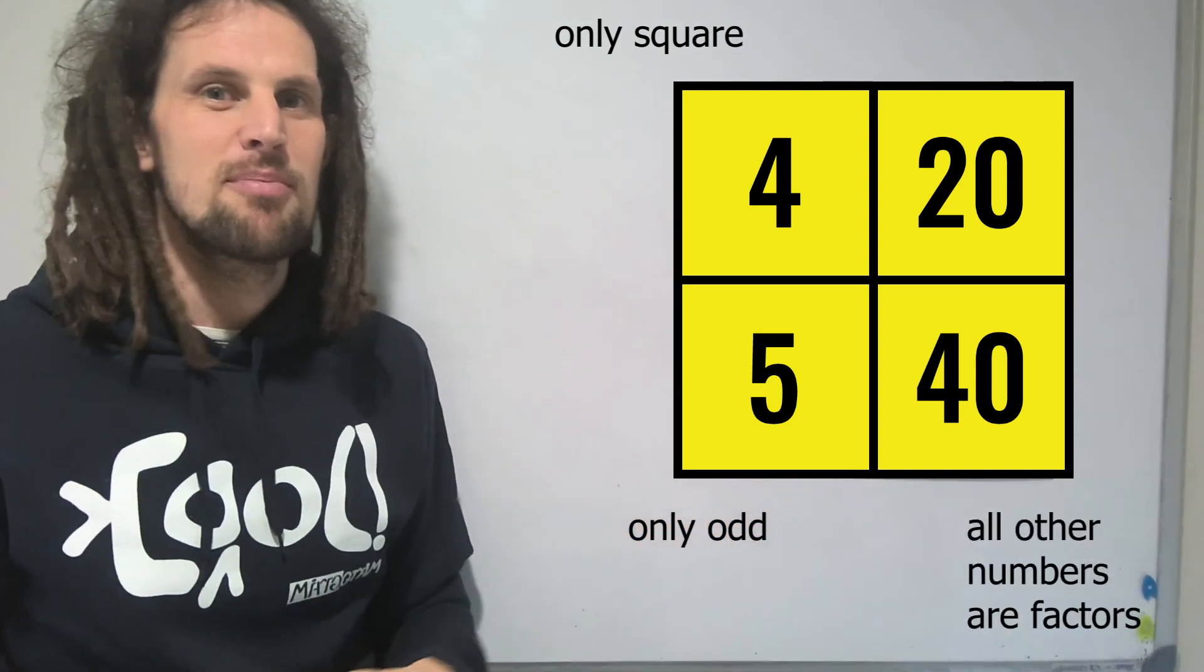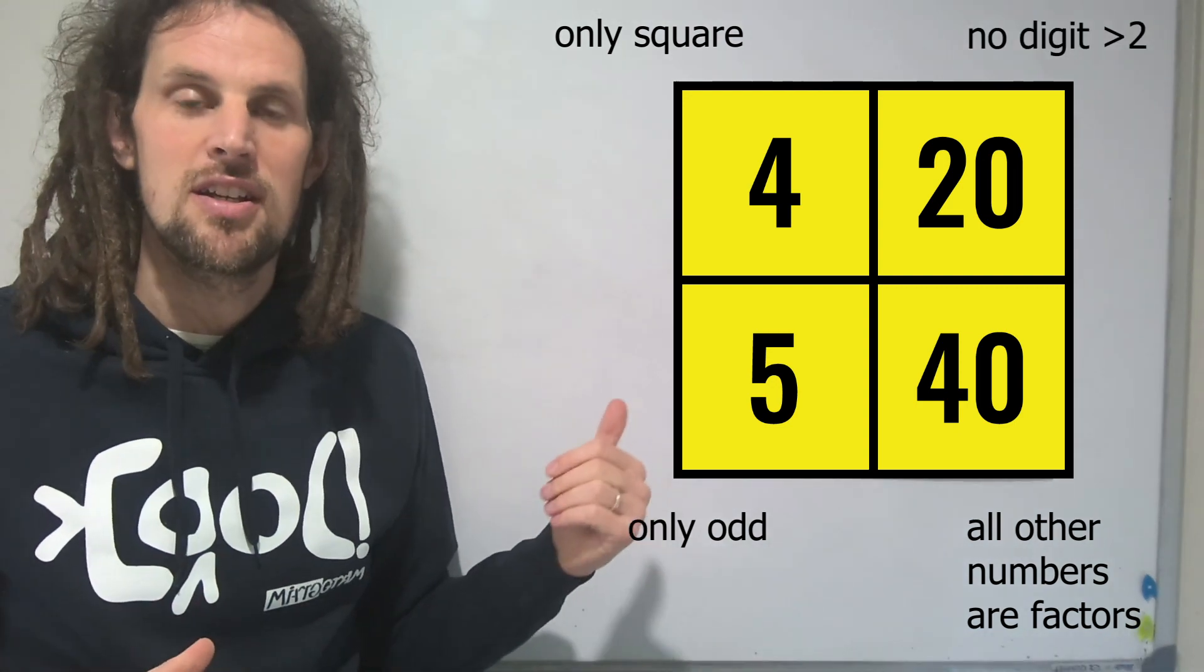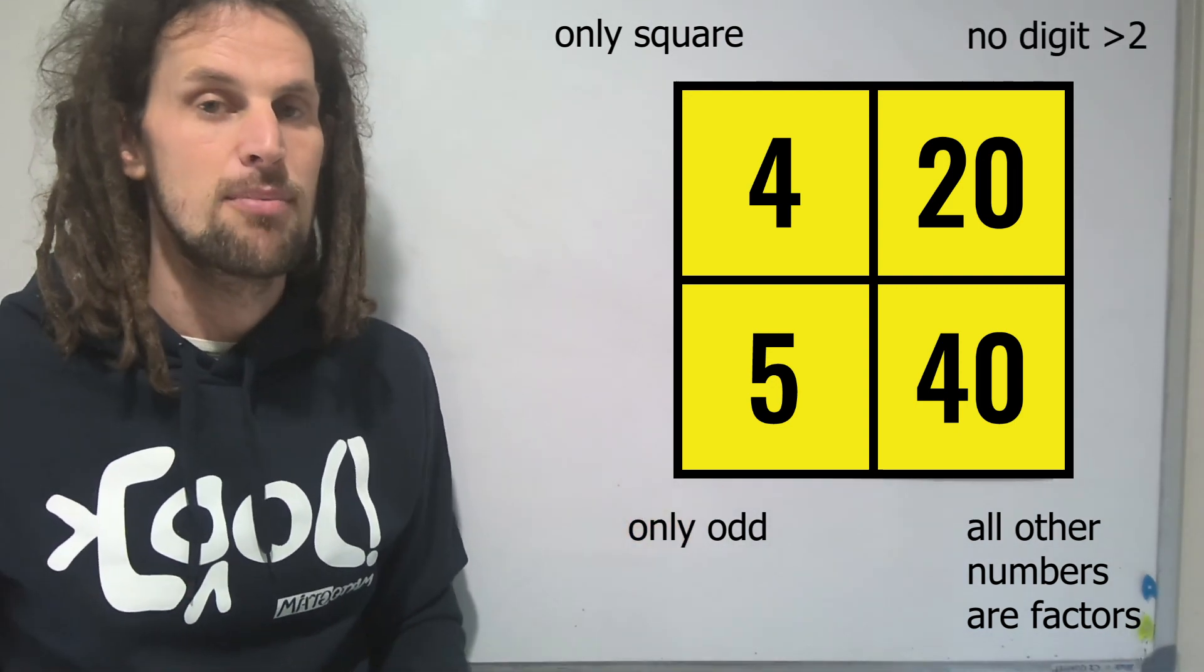We're scraping the barrel a bit here to get evidence against 20, but we might say no digit is greater than two. So therefore, the 20 is the imposter.